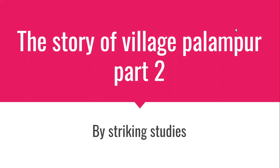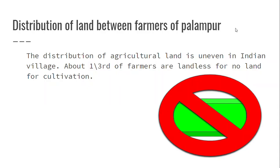Hey guys, welcome back to Striking Studies. So today we will be doing the Story of Village Palampur Part 2. This video's main topic is just going to be the distribution of land between the farmers of Palampur. The picture shown is supposed to represent land with a big no symbol — showing no land for the one-third landless farmers of Palampur.